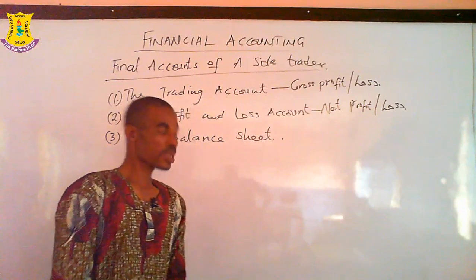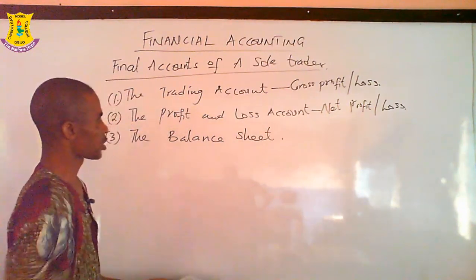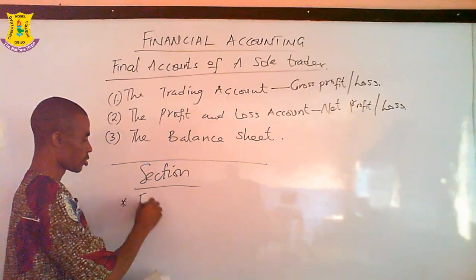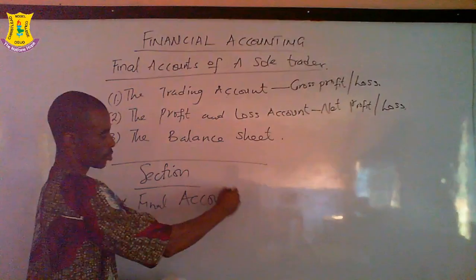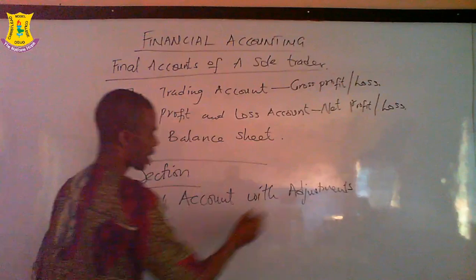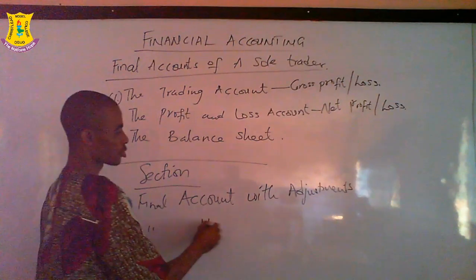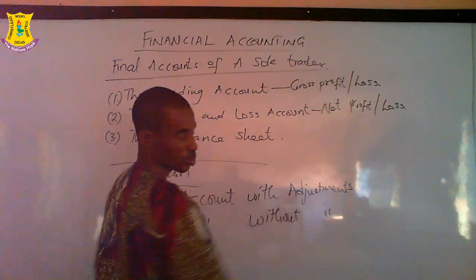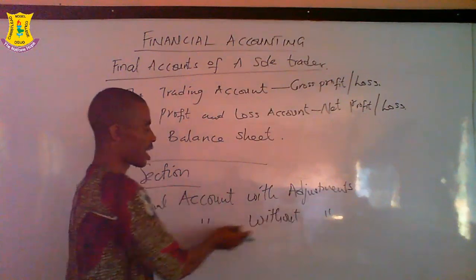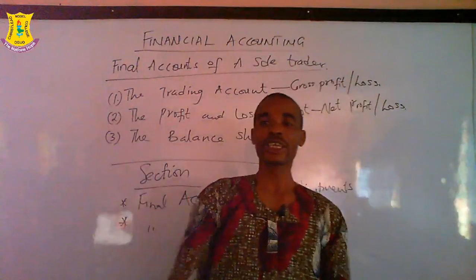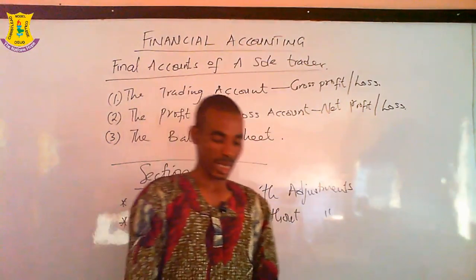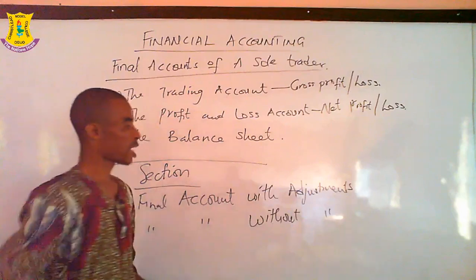Looking at final accounts, we have two sections. The first is final accounts with adjustments, and the second is final accounts without adjustments. In most cases, WAEC does not look at final accounts without adjustments, because they want to test your IQ — whether you truly understood what your teacher taught you.